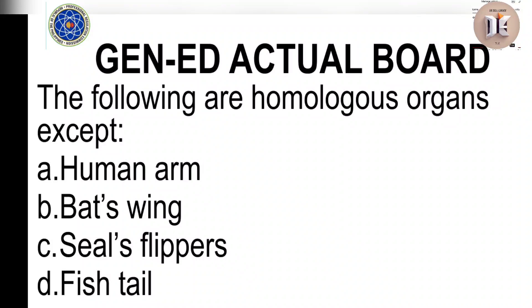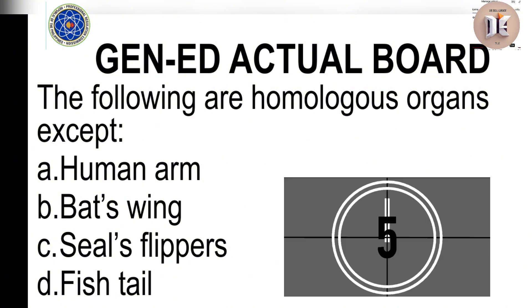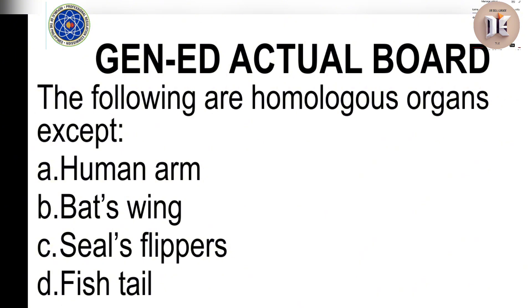The following are homologous organs except: A. Human arm, B. Bat's wing, C. Seal's flippers, D. Fish tail. Correct answer: D. Fish tail.